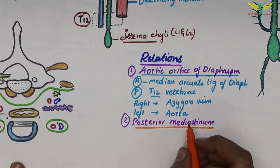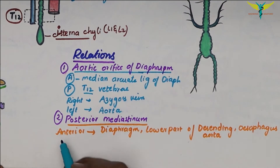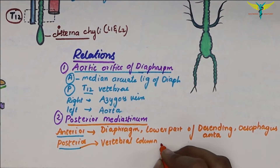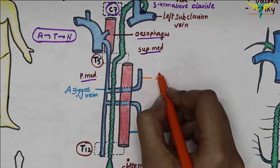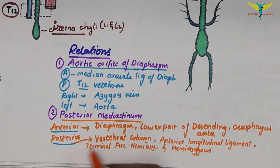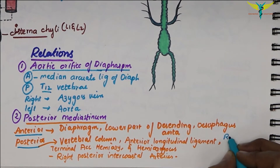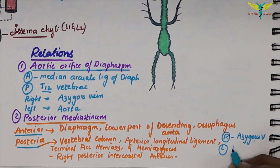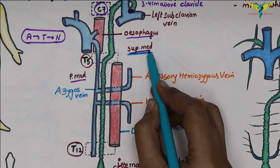In the posterior mediastinum, the anterior relations are the diaphragm, the lower part of the descending aorta, and the esophagus. The posterior relations are the vertebral column, the anterior longitudinal ligament, the terminal parts of the accessory hemiazygous vein and the hemiazygous vein, and the right posterior intercostal arteries. To the right side is the azygous vein, and to the left side is the descending thoracic aorta. The duct then enters the superior mediastinum.